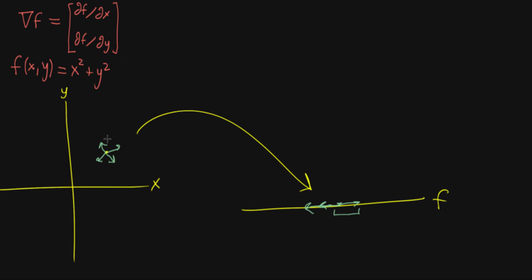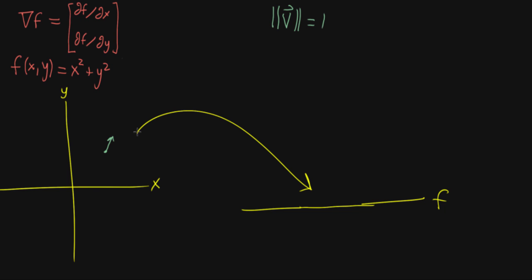Instead of thinking about all possible directions and all the possible changes to the output they have, let's say you just have your point where you're evaluating things and then just a single vector. Let's make it a unit vector — let's make it the case that this vector has a length of one. We'll call it v, and v has a length of one. So this is our vector.